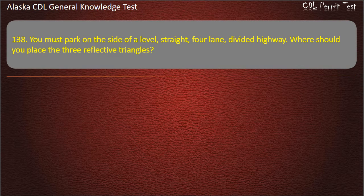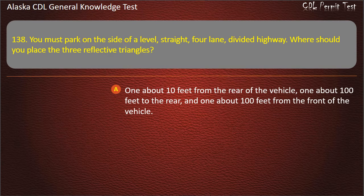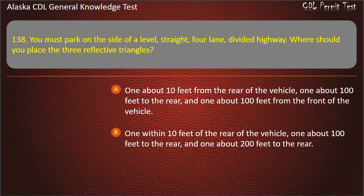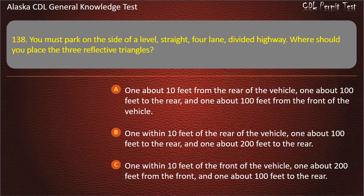Question 138. You must park on the side of a level, straight, four-lane divided highway. Where should you place the three reflective triangles? One within 10 feet of the rear of the vehicle, one about 100 feet to the rear, and one about 200 feet to the rear. Answer: One within 10 feet of the rear, one about 100 feet to the rear, and one about 200 feet to the rear.